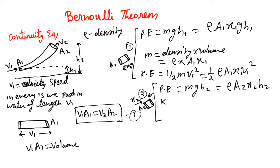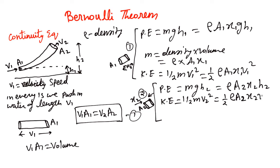Similarly, the kinetic energy at position 2 is KE = ½·m·v2² = ½·ρ·a2·x2·v2². But there is one more thing we have forgotten to calculate.